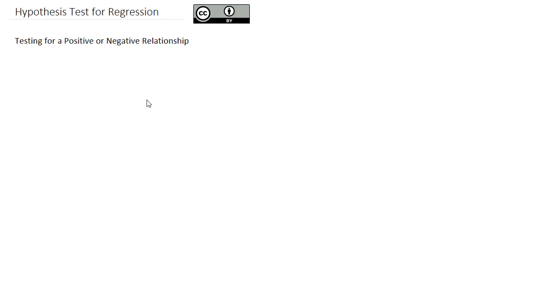Generally, when we're testing regression for whether or not a relationship exists, the hypothesis test will make the alternative hypothesis not equals zero because we're just interested in whether or not a relationship exists, not so much the direction. But on occasion, we are interested in testing if the relationship is specifically positive or specifically negative. So let's look at each of those types of relationships that we could test for.